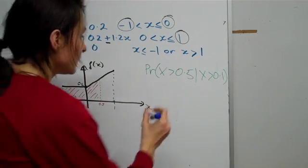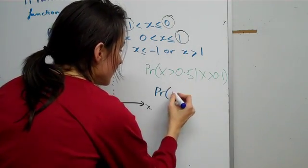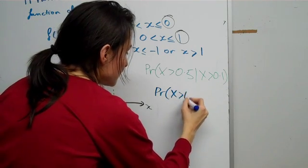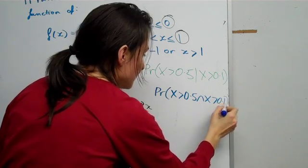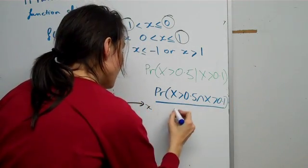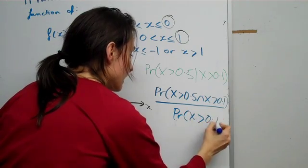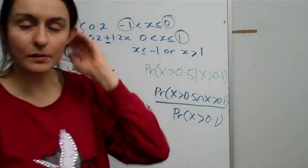Now, if you remember, our formula actually says that the probability of that is the intersection between these two divided by the probability x is greater than 0.1. So we need to make that into a simpler version.